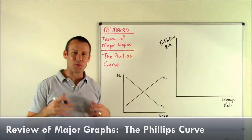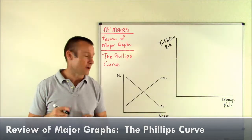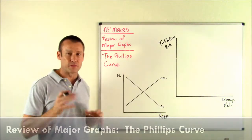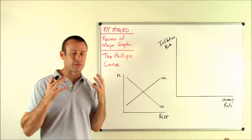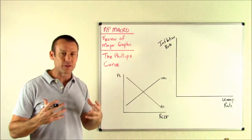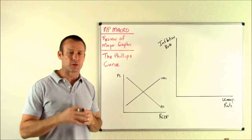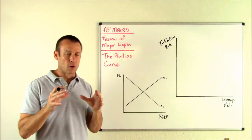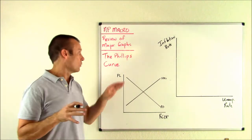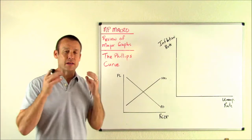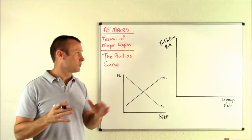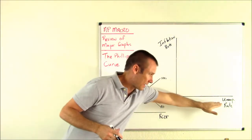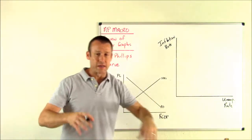Hey everybody, this is AP Macro. We're doing a review of major graphs and we are going to talk about the Phillips Curve in this video. We're trying to sum up all the major aspects of the Phillips Curve in a single video. What is this curve all about? It's about showing the relationship between the inflation rate and the unemployment rate.